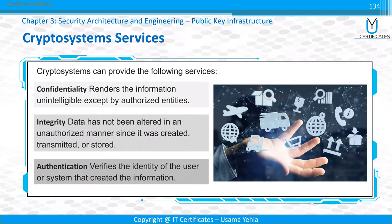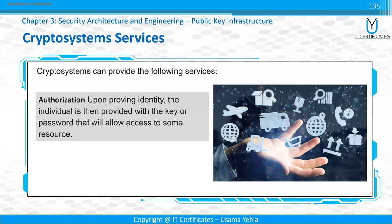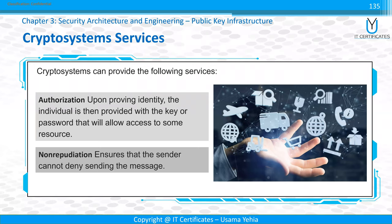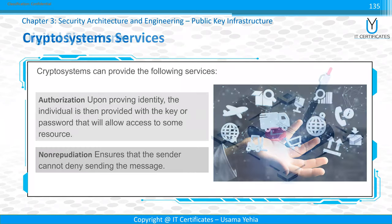Cryptosystem services: Confidentiality — data is encrypted so no one can access it without permission. Integrity — data will not be changed, or you can discover if it was changed using message integrity. Authentication — to verify the identity of the user. Authorization — to give permission for the service. Non-repudiation — ensures the sender cannot deny sending the message, which can be in the form of email, a record in a database, or a text file.